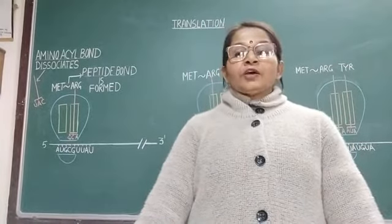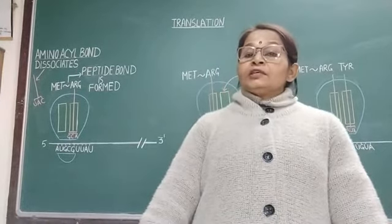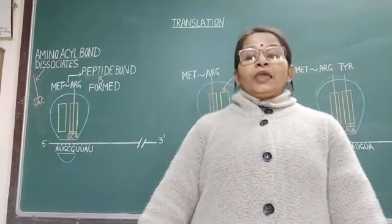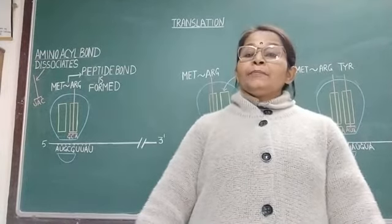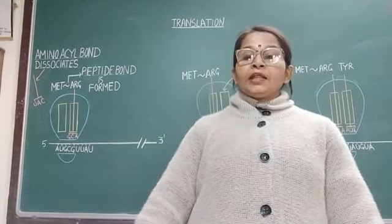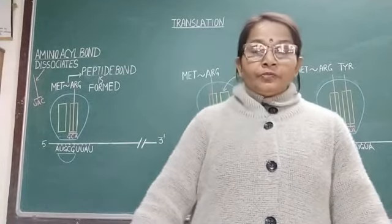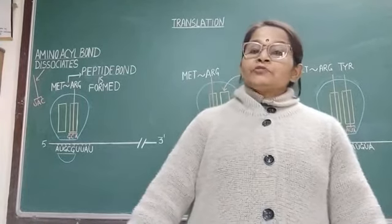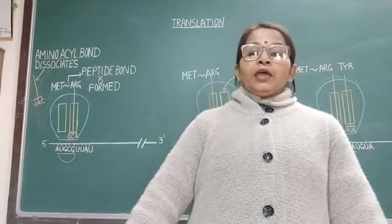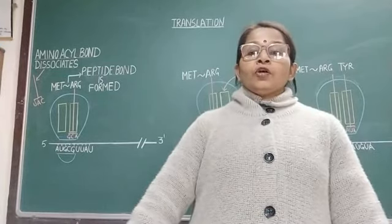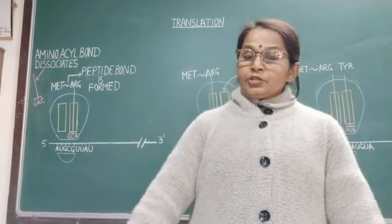Translation begins with the formation of initiation complex. Initiation complex is formed with the help of mRNA, the smaller subunit of ribosome, and the met-tRNA. Met-tRNA means the tRNA which carries the amino acid methionine. Because in all types of proteins, methionine is the initiating amino acid. Means in all types of proteins, the first amino acid is always methionine.